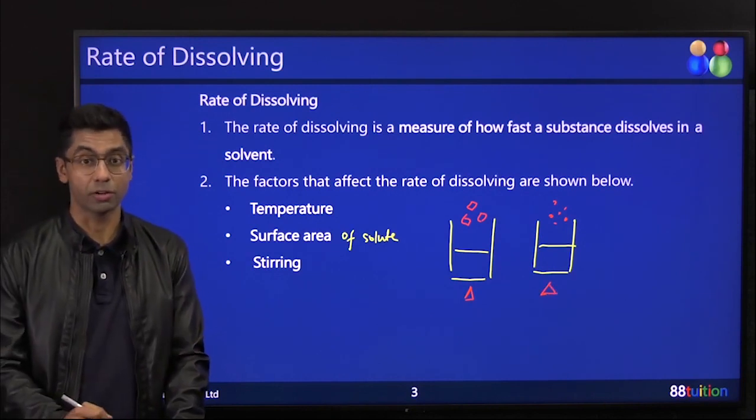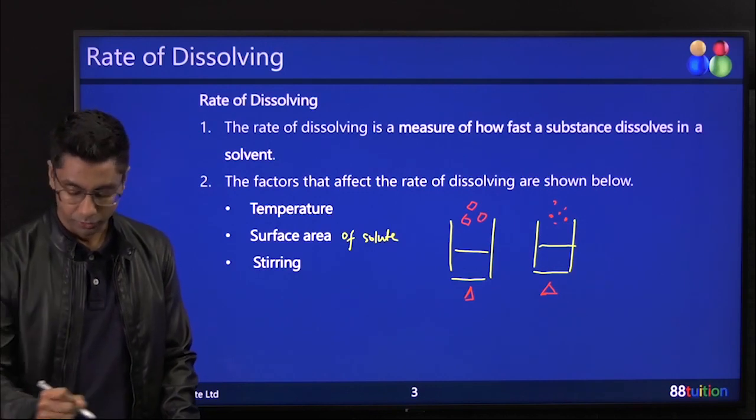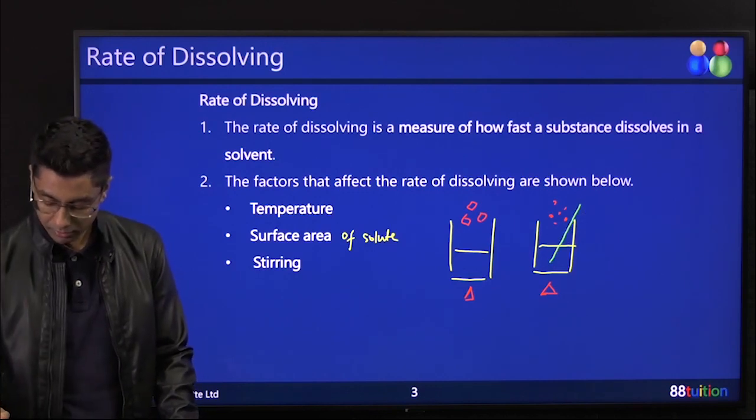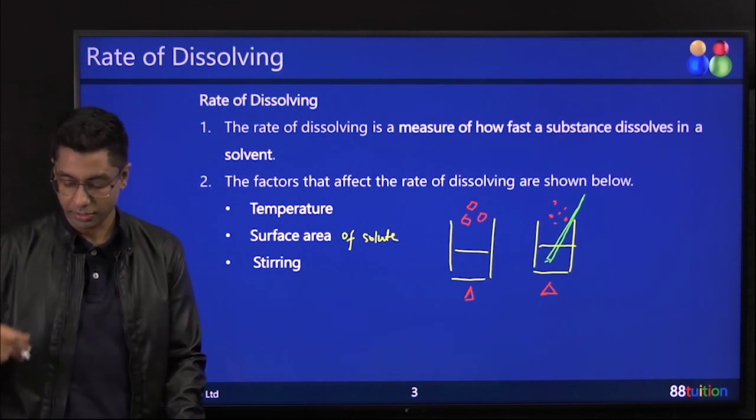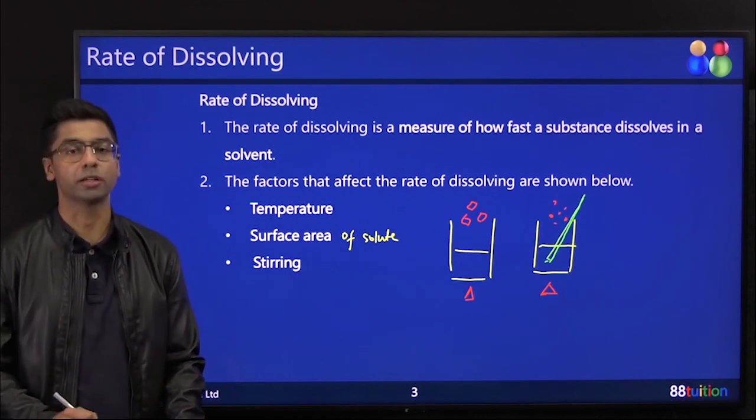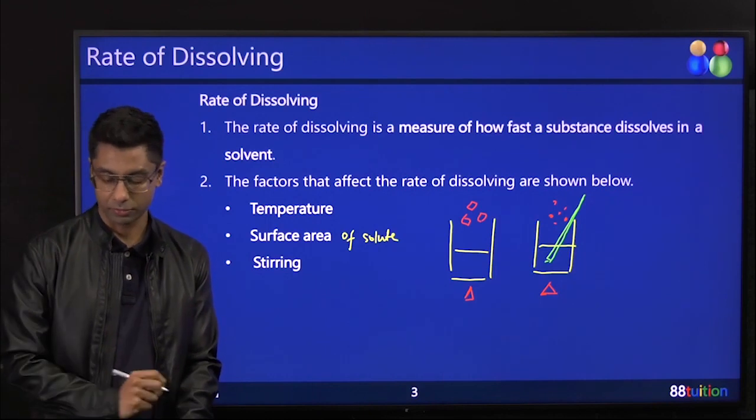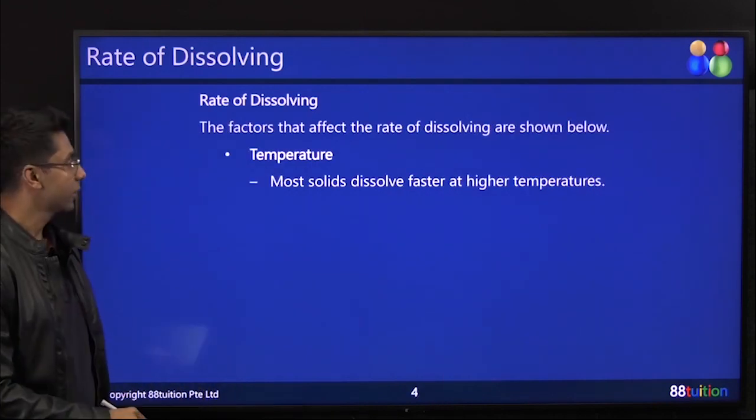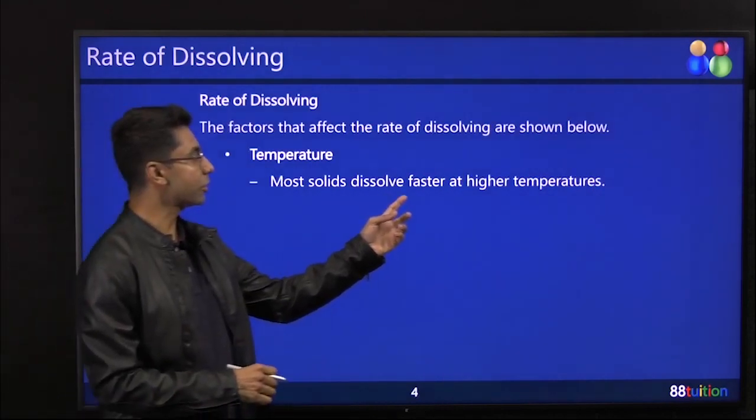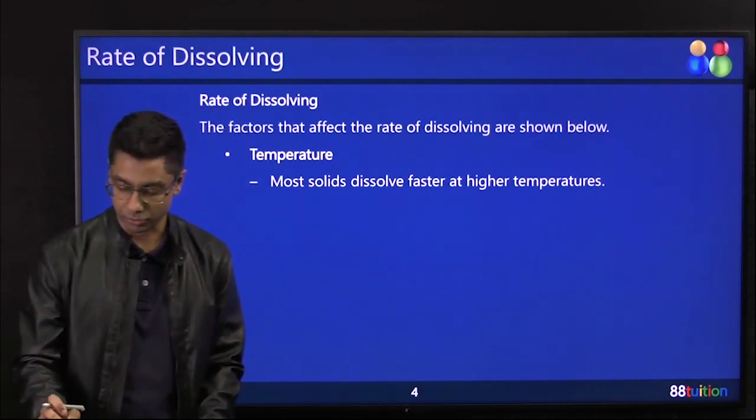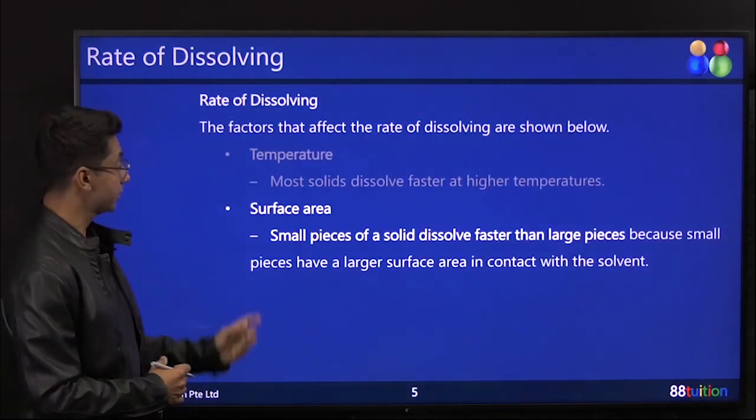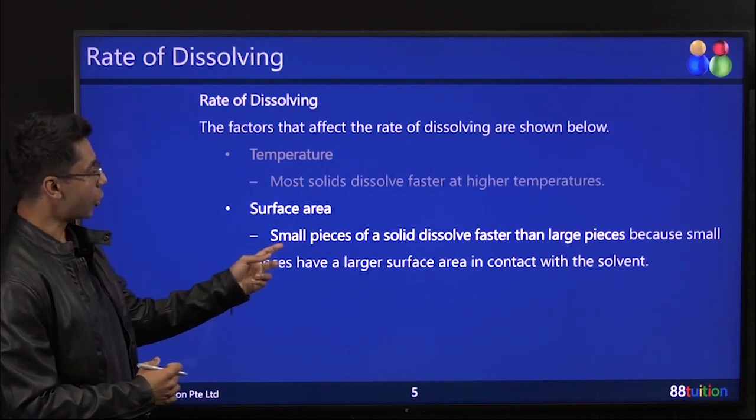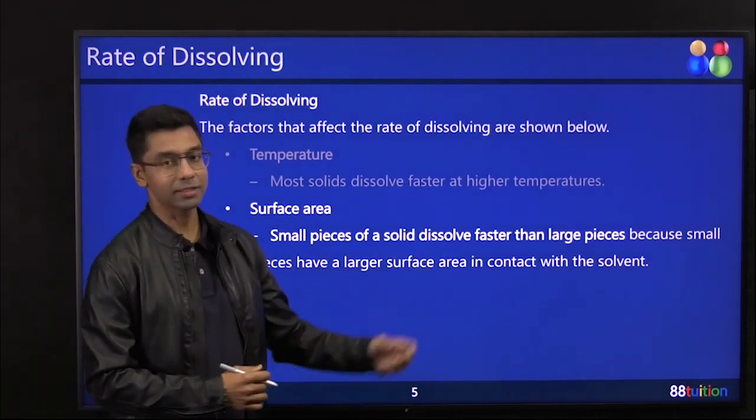And lastly, you can stir. So this is a stirrer—you put it in and stir it. You can increase the rate of dissolving. Let's look at it closer. Temperature: most solids dissolve faster at higher temperatures. Of course, quite common sensical.